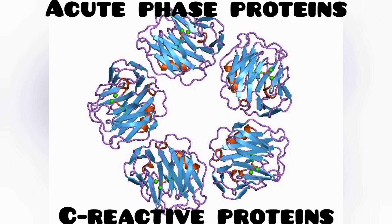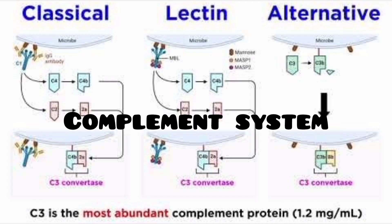Certain proteins collectively known as acute phase response proteins are also produced in inflammation. The best known of this family is C-reactive protein, which is produced by the liver and is thought to play an important role in activating the alternative pathway of the complement system. These proteins bind to the surface of bacteria and help in their phagocytosis. C-reactive protein is also an indicator of inflammation and infection.